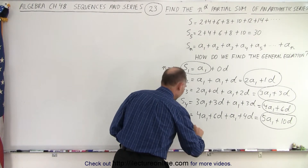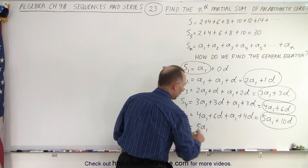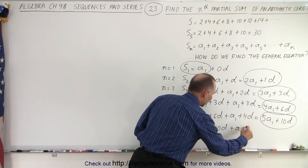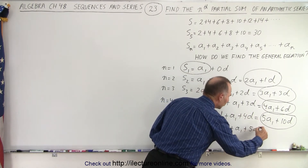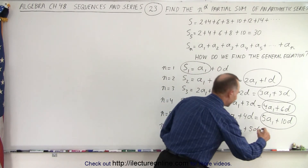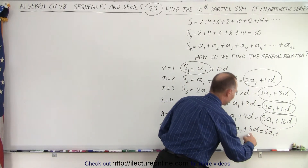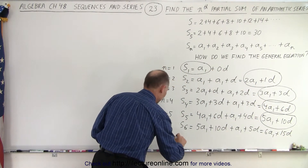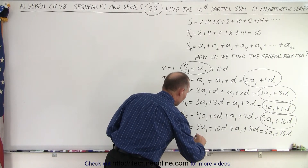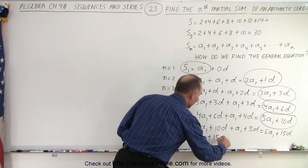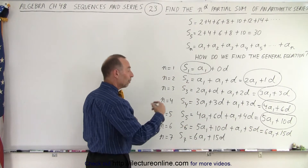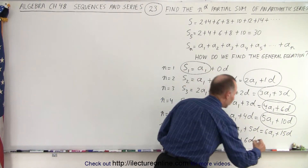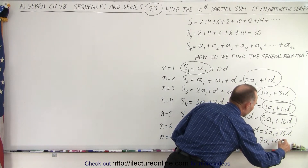When n is equal to 6, S sub 6 equals S sub 5 plus one more a1 plus 5d, giving 6a sub 1 plus 15d. When n equals 7, S sub 7 equals 6a sub 1 plus 15d plus another a sub 1 plus 6d, which equals 7a sub 1 plus 21d.